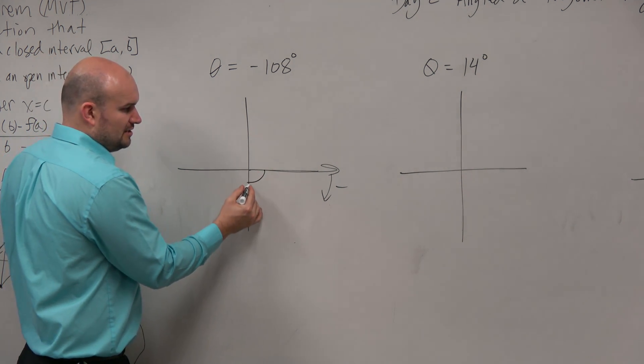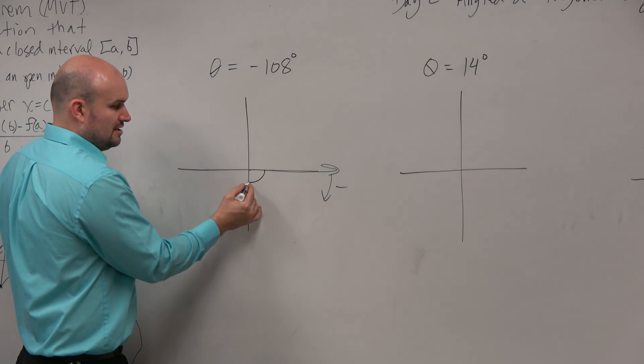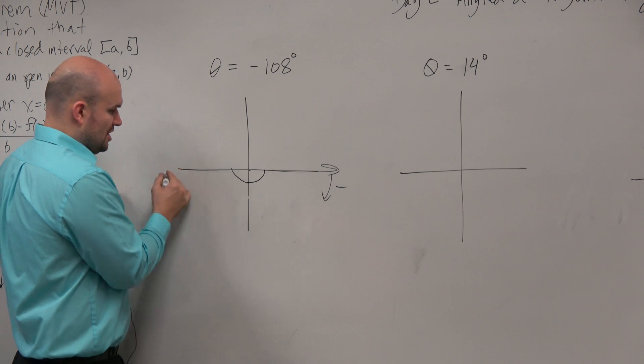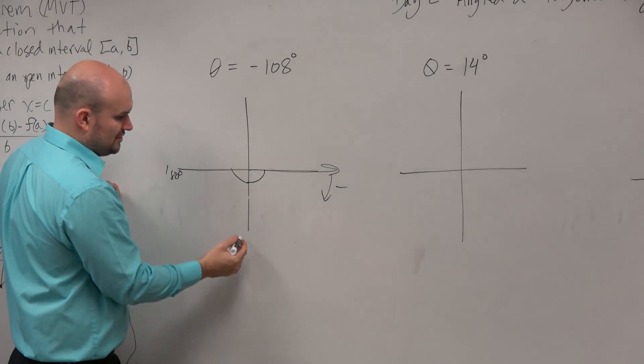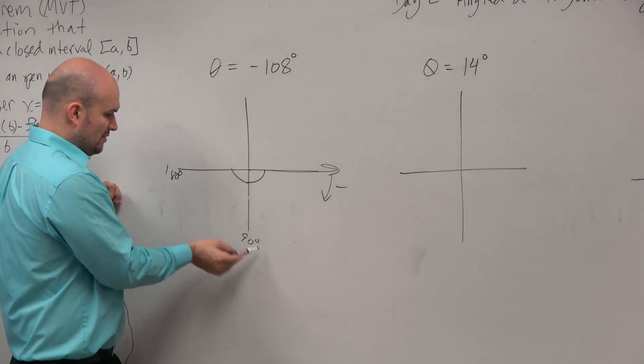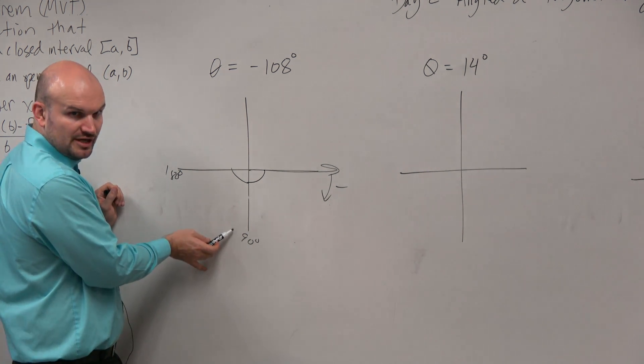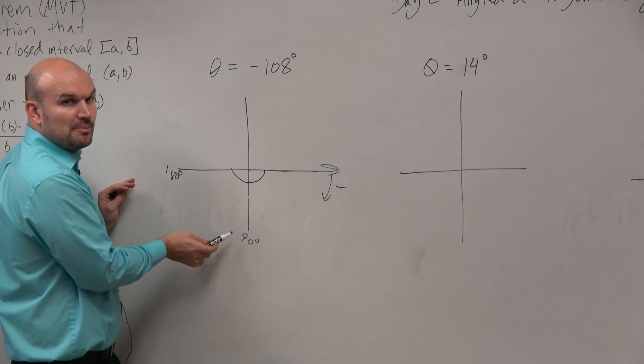We know if I rotate from here to here, that's 90 degrees. From here to here is 180. So I know that 108 degrees is somewhere in between 90 and 180, and it's probably a little bit closer here. We're not asking you guys to be perfect,